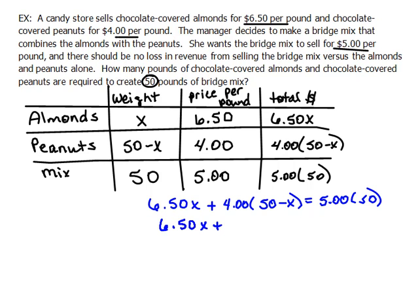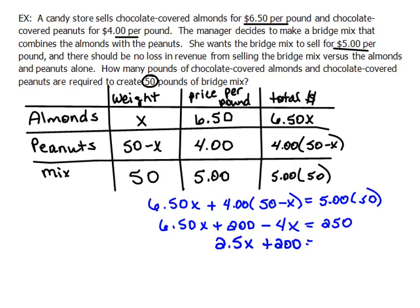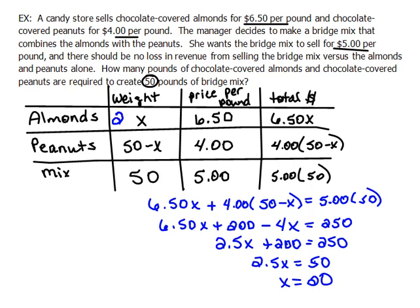Expanding: 6.50X plus 4 times 50 is 200, minus 4X equals 5 times 50 which is 250. Combining like terms: 6.5 minus 4 gives 2.5X plus 200 equals 250. Subtracting 200 from both sides gives 2.5X equals 50. Dividing both sides by 2.5 gives X equals 20. So X equals 20 tells us the weight of the almonds is 20 pounds, which leaves 30 pounds for the weight of the peanuts.